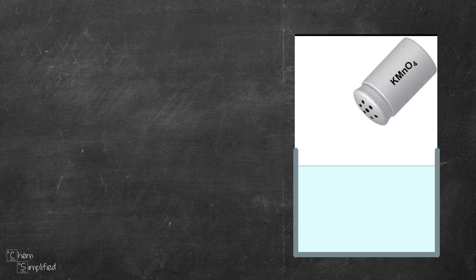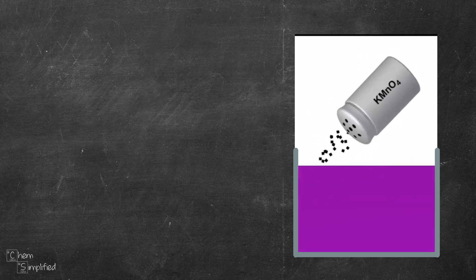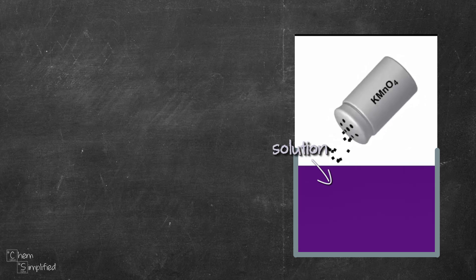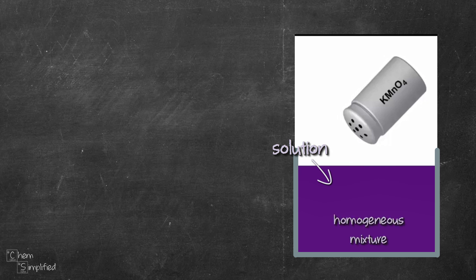Now watch what happens when I shake the solid into the beaker. The water turns purple and in fact is now called potassium permanganate solution. It's a solution because it's a mixture of water and potassium permanganate. They combine uniformly to form the clear purple solution, a homogeneous mixture.